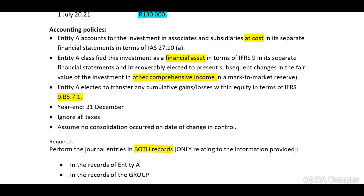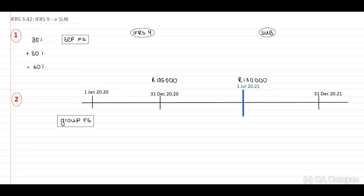Step number one, as always: identify the change. We can identify that this is a normal IFRS 9 investment, an additional 30% was purchased, and this is now a subsidiary. Therefore, we know we need to apply IFRS 3 paragraph 42.